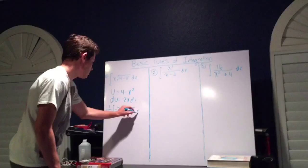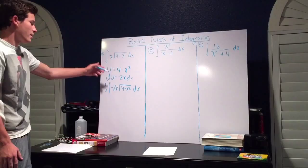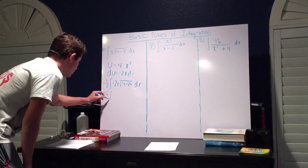We can rewrite this again, replacing what we have for u and du as negative 1 half times the integral of u to the 1 half du.